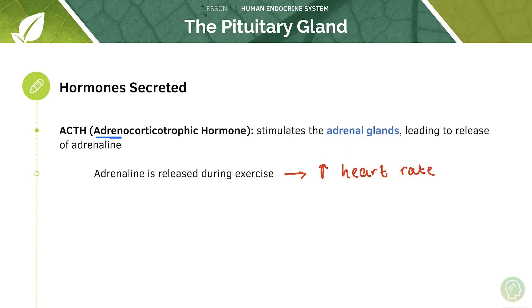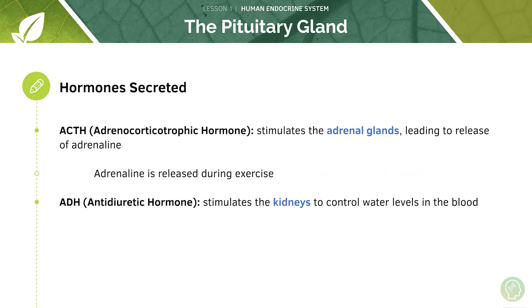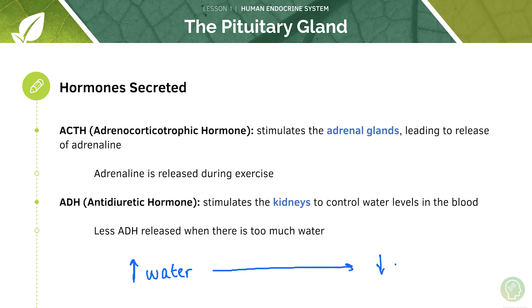A good way of remembering ACTH: it stands for adrenocorticotropic hormone, so it stimulates the adrenal glands. ADH — antidiuretic hormone — stimulates the kidneys to control water levels in the blood. When you have too much water in your blood you're going to get less ADH released, because with too much water you want to decrease it, meaning you want to produce urine. To produce urine you need to decrease antidiuretic hormone because you want diuresis — diuresis means production of urine. So too much water in the blood leads to decreased ADH levels, and therefore more water is lost through urine production, decreasing blood water levels.